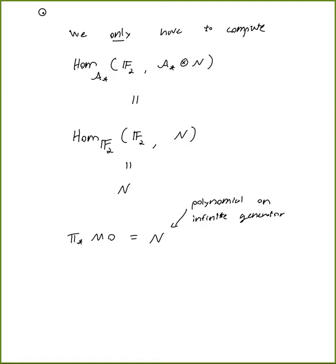So there can be no differentials on any page of the Adams spectral sequence for MO, and we get that the two-completed homotopy groups π_* of MO are N — a polynomial ring with one generator in each positive degree except 2^k − 1. This kind of feels like cheating because the key input was the homology groups, but it nicely shows how once you know the homology groups, the formal properties of Ext in the Adams spectral sequence give you the homotopy groups essentially for free.